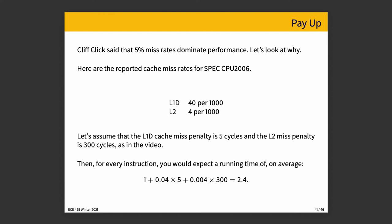A linked video notes that five percent miss rates are dominating performance. Looking at reported cache misses for SPEC CPU 2000 and 2006 benchmarks: many CPUs have separate instruction and data caches for Level 1 — L1D (data) and L1I (instruction). The miss rate is about 40 out of every 1000 instructions missing in L1, and about 4 out of 1000 missing in L2. Assuming a Level 1 miss penalty of 5 cycles and a Level 2 miss penalty of 300 cycles, with no Level 3 cache in this scenario.